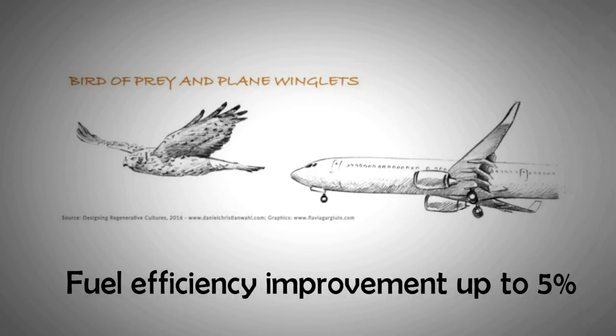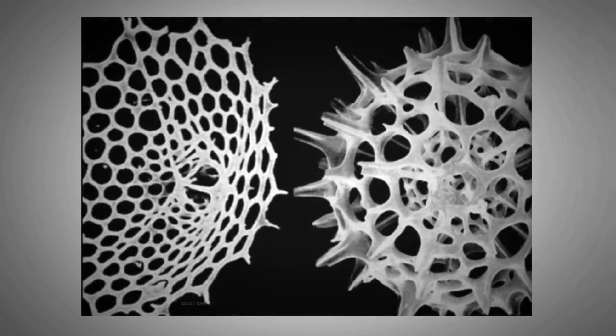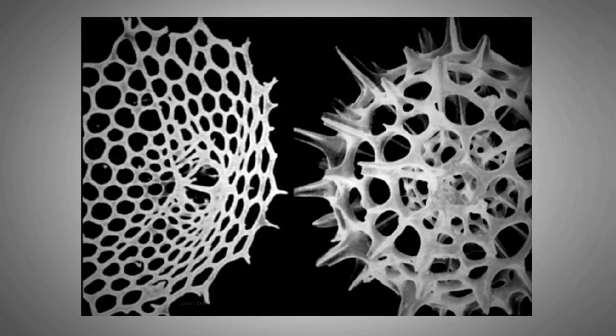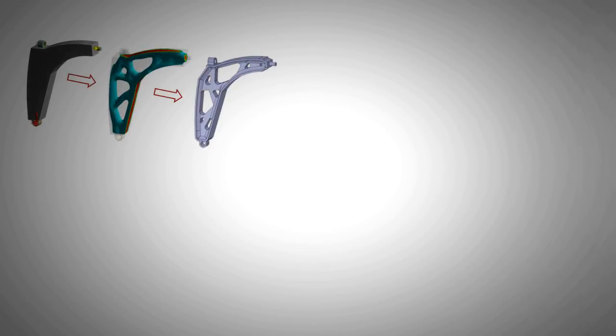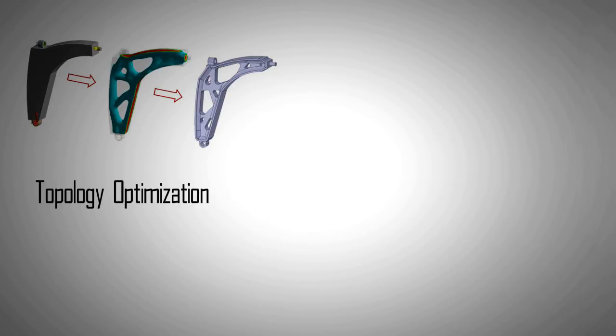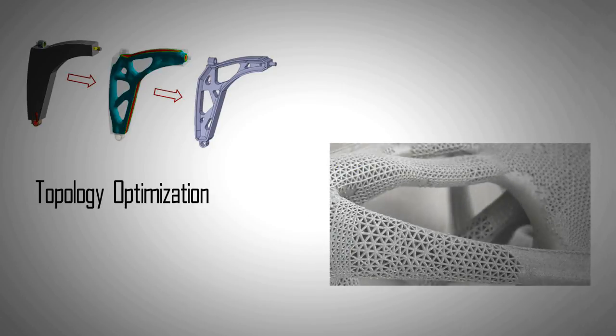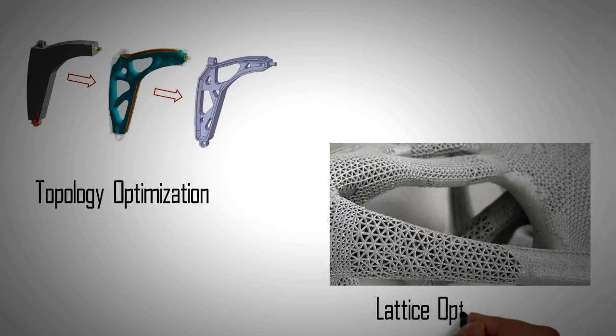The difference with generative design is that we are looking at natural ways of growing a design from the onset rather than applying them retrospectively. And this is where we can differentiate between generative design and technologies that feel like it but are not. For example, topology optimization, lattice optimization, parametrics or similar technologies are focused on improving a pre-existing design, not creating new design possibilities with generative design.